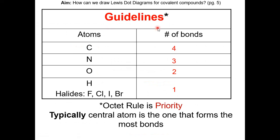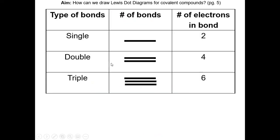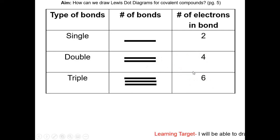Here are some guidelines to help you draw the Lewis dot diagram for covalent compounds. Keep in mind the octet rule is the priority, so there will be exceptions. Typically, the central atom is the one that forms the most bonds: carbon forms 4, nitrogen forms 3, oxygen forms 2, and the halides and hydrogen form 1. Covalent compounds can have single, double, or triple bonds — represented by one, two, or three lines respectively. A single bond has two electrons, double has four, and triple has six, because each line represents two electrons.